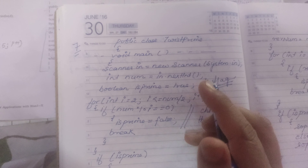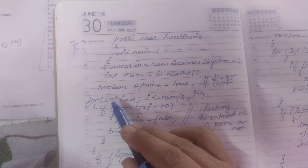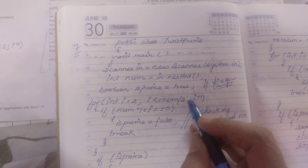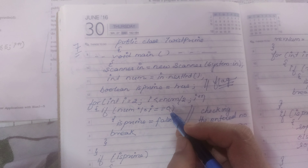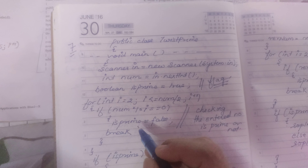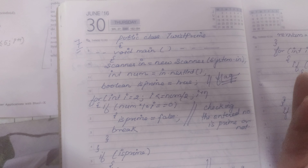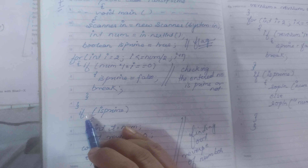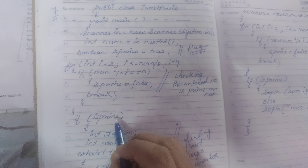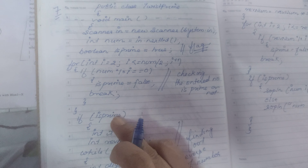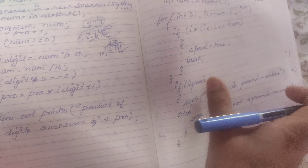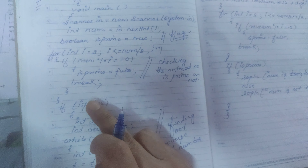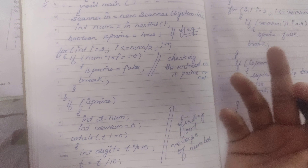For the prime check: for integer i equals to 2 — we start from 2 till number divided by 2, meaning half of the number, i plus plus. If number mod i equals to 0 in any condition — because we are not checking for 1, we are checking from 2 — so if from 2 to the mid of the number we get 0 at any point, the number is completely divisible. Since we exclude 1 and the number itself, if it divides by any other number it cannot be prime, so isPrime is set to false.